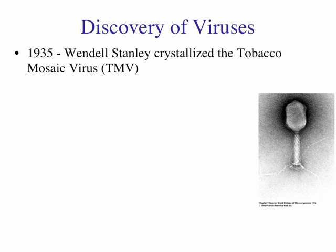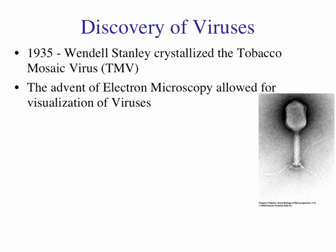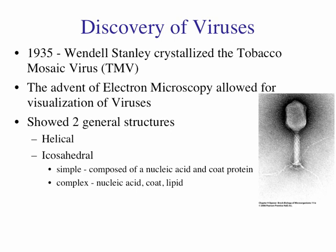In 1935, Wendell Stanley crystallized the tobacco mosaic virus — a virus that causes wilting in tobacco plants, which was a very important agricultural product. They found they could crystallize it and see it in the electron microscope, and therefore there is something there. The advent of that allowed us to look at viruses in more detail. These filterable, passageable entities were structures found in the liquid that could not be cultured at the time.